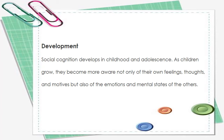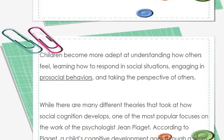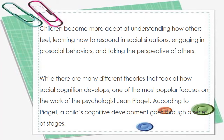We come now to the development. Social cognition develops in childhood and adolescence. As children grow, they become more aware not only of their own feelings, thoughts, and motives, but also of the emotions and mental states of others. Children become more aware of understanding how others feel, learning how to stand in social situations, engaging in pro-social behaviors, and taking the perspective of others.